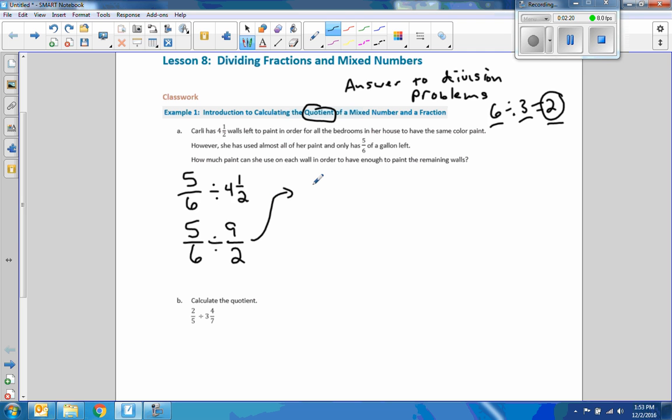Now we can convert this division problem into a multiplication problem. We take the dividend, switch this to multiplication, then we multiply by the reciprocal of this. We flip this around to two-ninths.